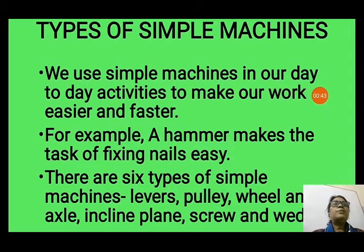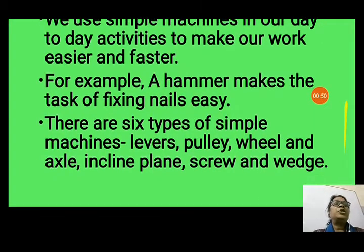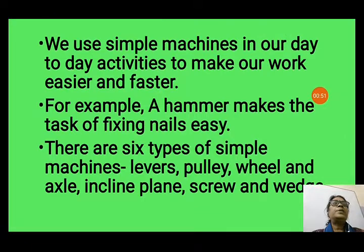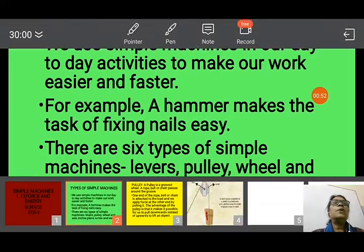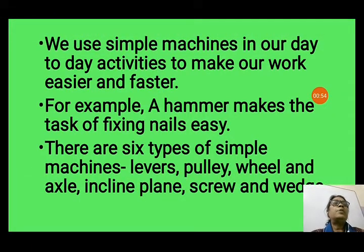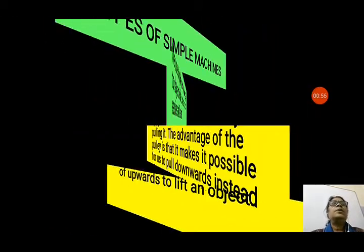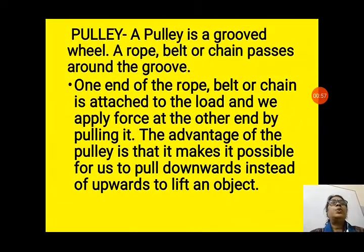There are 6 types of simple machines: lever, pulley, wheel and axle, inclined plane, screw, and wedge. We will discuss the different types of simple machines in this video.